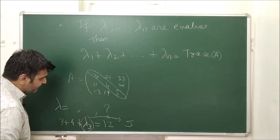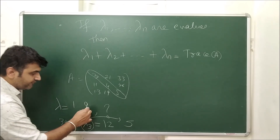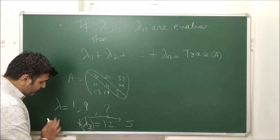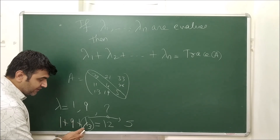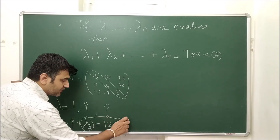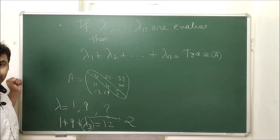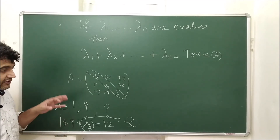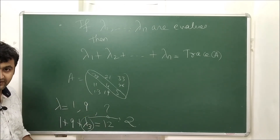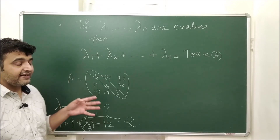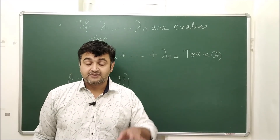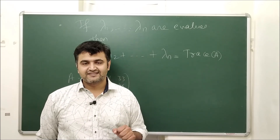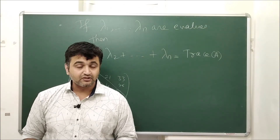If instead the known eigenvalues were 1 and 9, then 1 + 9 + λ₃ = 12, giving λ₃ = 2. So knowing some eigenvalues and the matrix's trace allows you to find the remaining one. This is the connection between the sum of eigenvalues and the trace of a matrix — summarizing all the key properties of eigenvalues covered today.